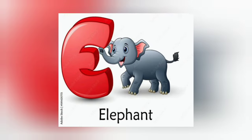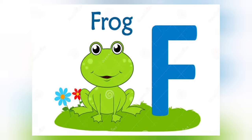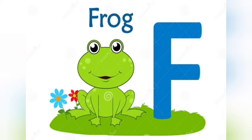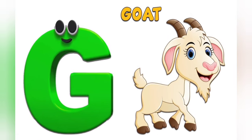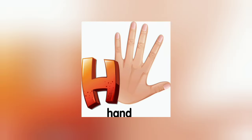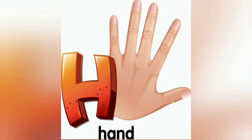E is for elephant, e-e-elephant. F is for frog, f-f-frog. G is for goat, g-g-goat. H is for hand, ha-ha-hand.